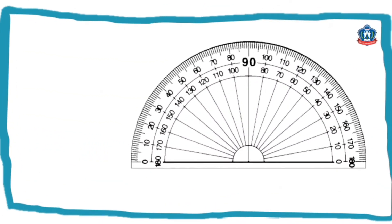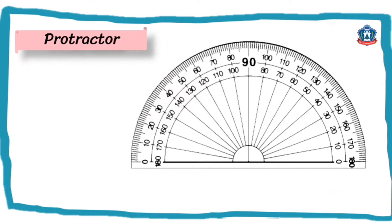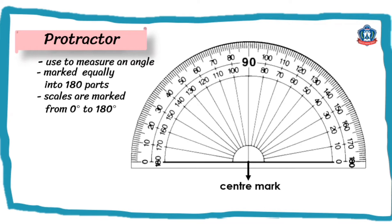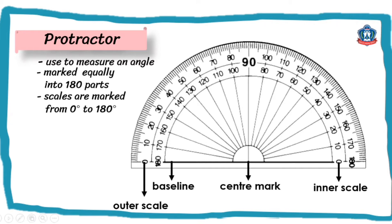Before we estimate and measure an angle, we need to study first a protractor. Children, prepare your own protractor. A protractor is a measuring tool used to measure an angle. It is marked equally into 180 parts and the scales are marked from 0 degrees to 180 degrees. This part here we call the center mark. The black line we call the baseline. A protractor has 2 scales — the outer scale and the inner scale — both marked from 0 degrees to 180 degrees.